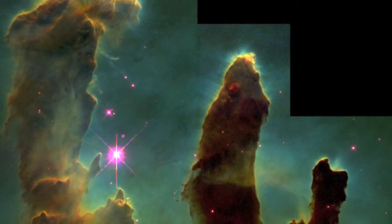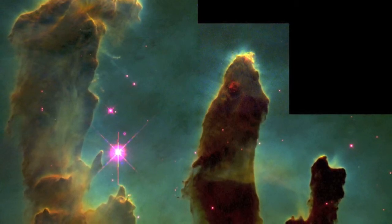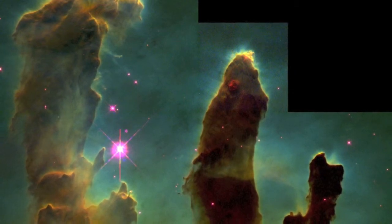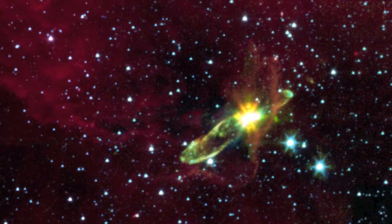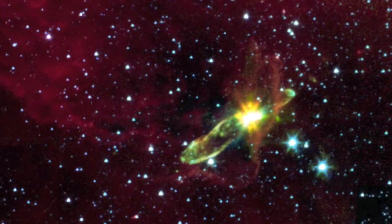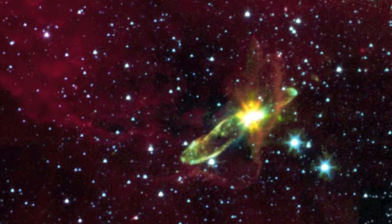This process is called accretion and takes around 10 million years to complete. However, a star is not fully formed after this process is finished. It must go through another stage in its life cycle. After the collection of hydrogen-helium has gathered to a mass of approximately 2 times 10^28 kilograms, it becomes a protostar.